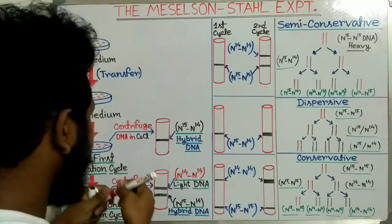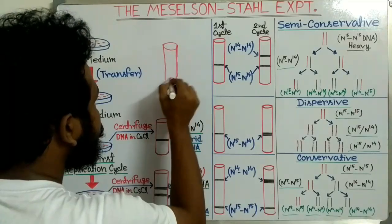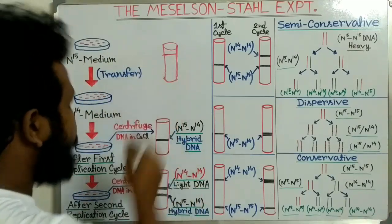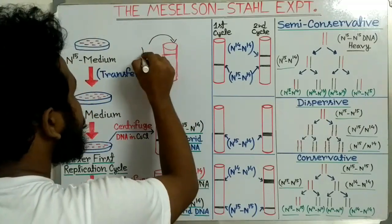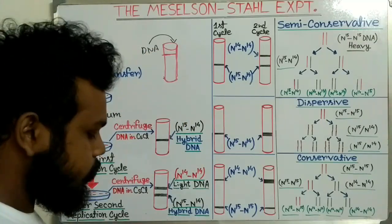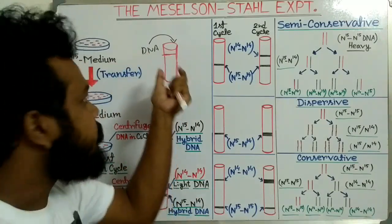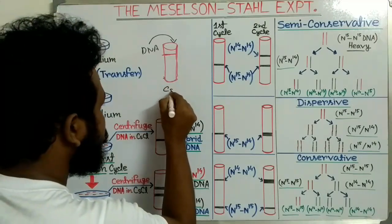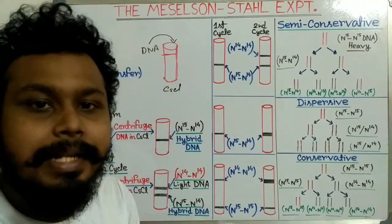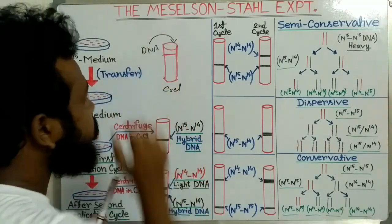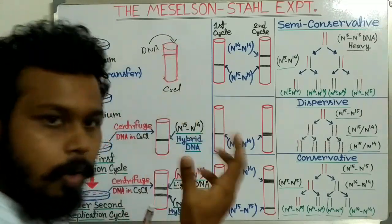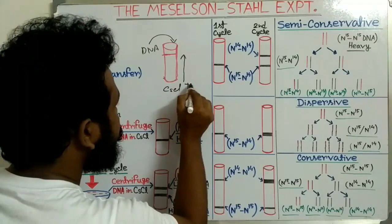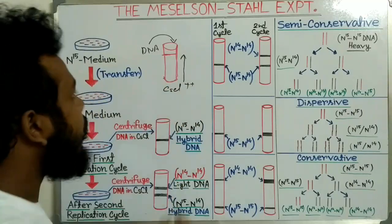Now, what is cesium chloride density gradient centrifugation? Suppose this is a tube containing a cesium chloride salt solution. The isolated DNA is mixed with this cesium chloride salt, and then this mixture is centrifuged. After centrifugation, the cesium chloride makes a density gradient — the density becomes lower from the bottom to the top, meaning the highest density is at the bottom.